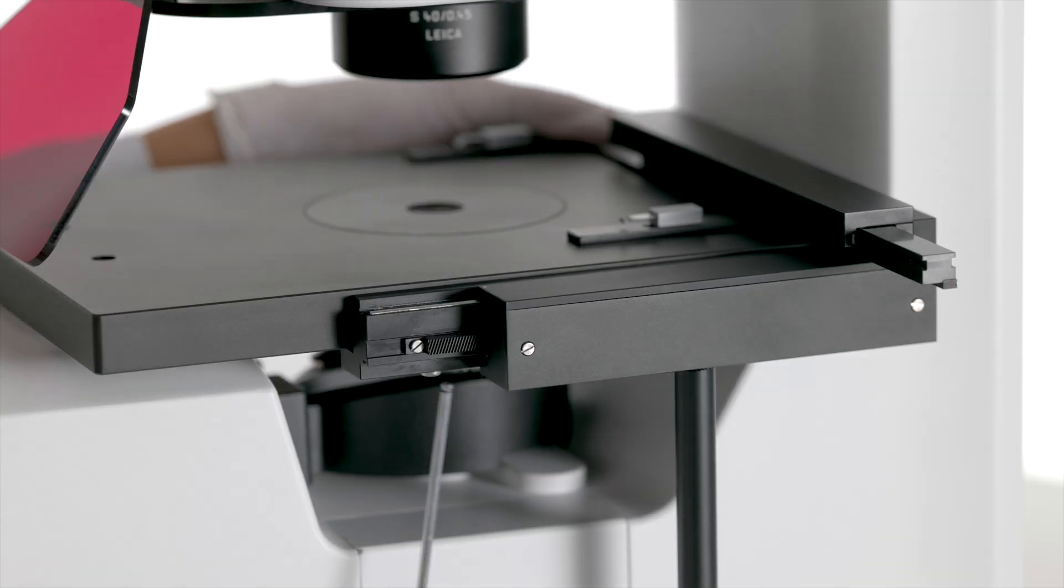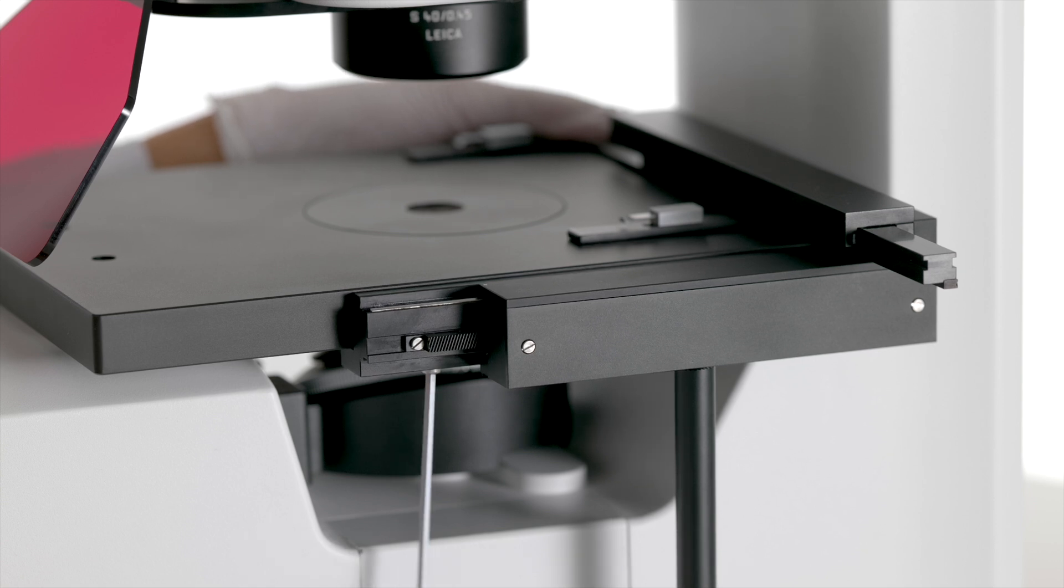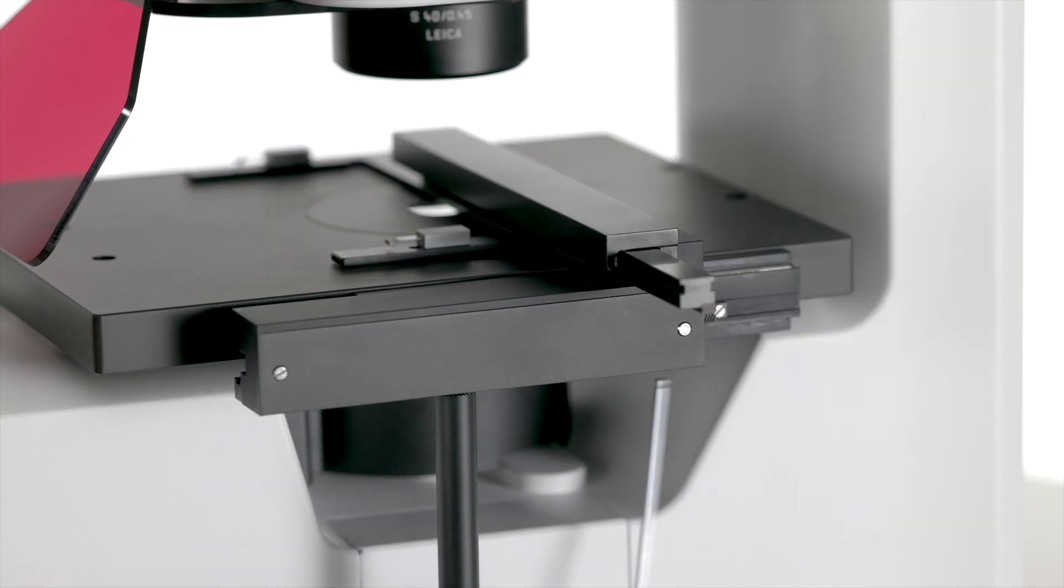When installing the object guide and holding frame, the first step will be to align the two hexagon screws of the object guide with the two holes under the stage. Now screw them in until they are secure against the stage.